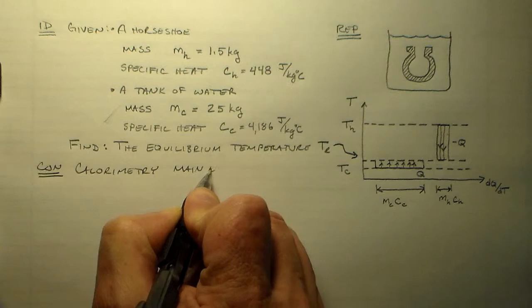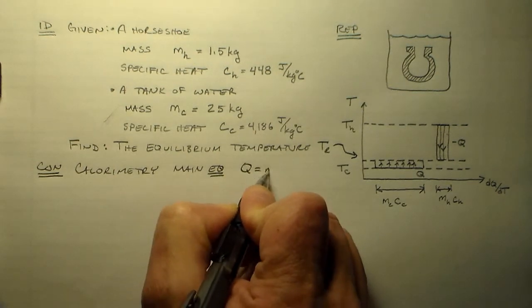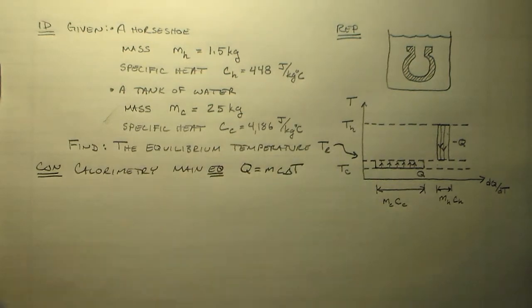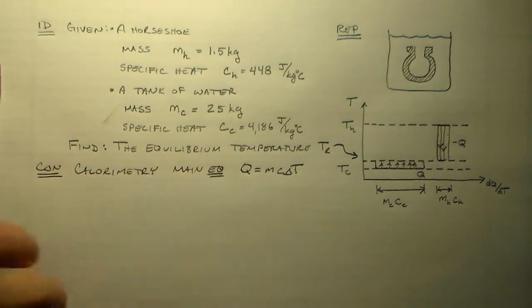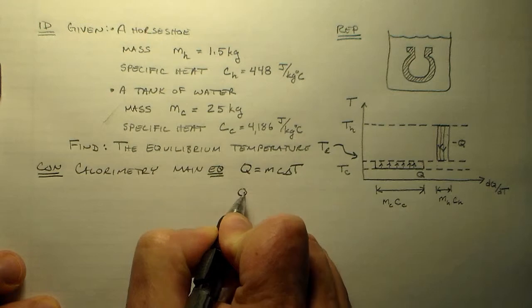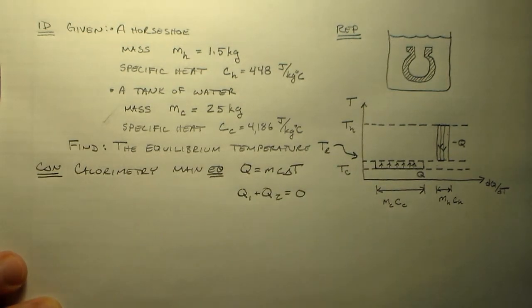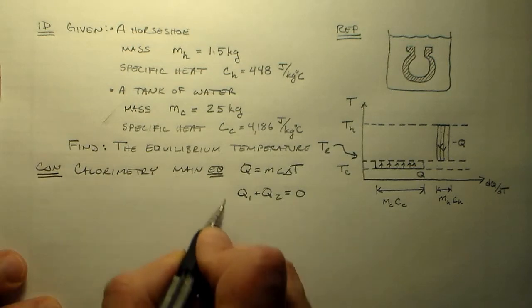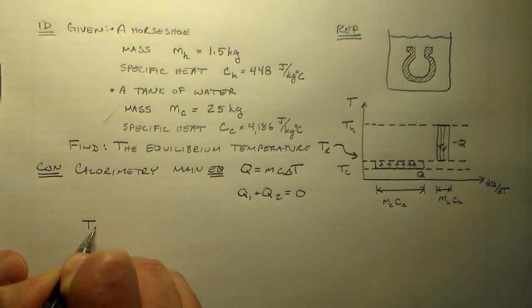The main equation is Q is equal to mc delta t. And what we're going to have to do here is we're going to say Q1 plus Q2, right, is equal to zero. You remember that. In fact, in class, we said Q1 plus Q2 is equal to zero.